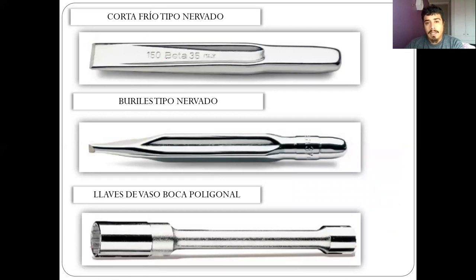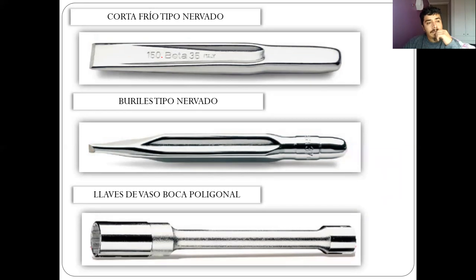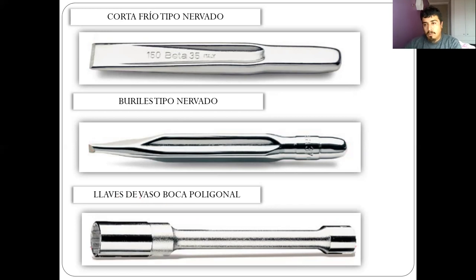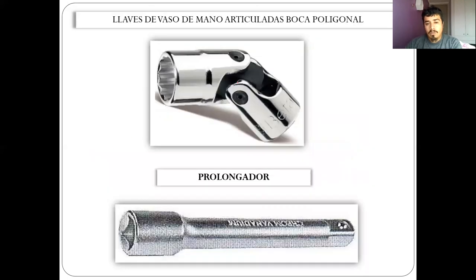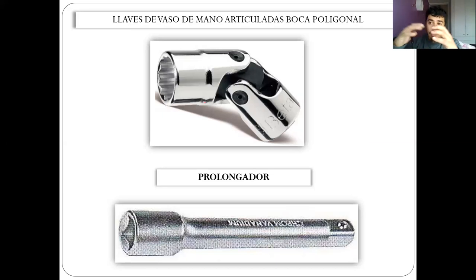Estos elementos sirven para limpiar los restos de alguna soldadura que quedan como escoria, sirven también para marcar y limpiar. Esta es la punta que va a estar en contacto para hacer esto y por acá se le va pegando con un mazo o un martillo. Hay prolongadores para llegar a lugares más complejos en espacio, y también tenemos el articulado, que sirve para entrar en partes donde es imposible por la geometría de la estructura llegar directamente.